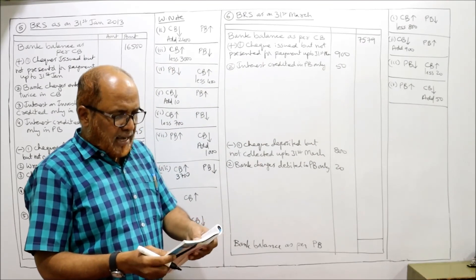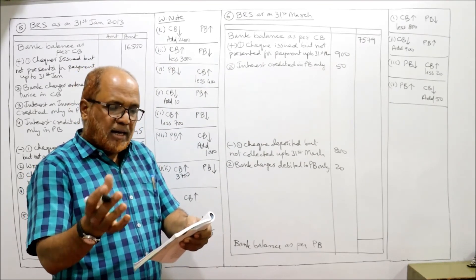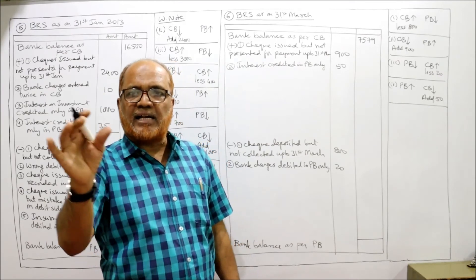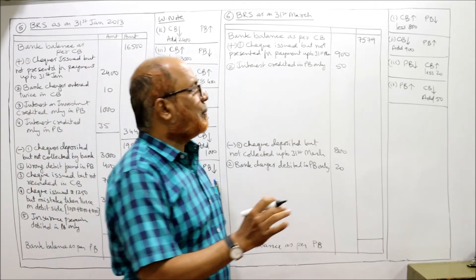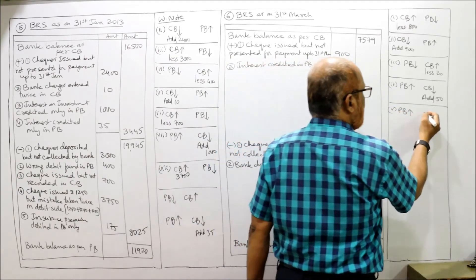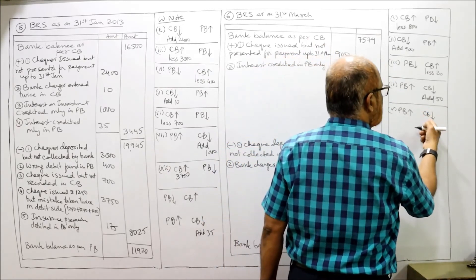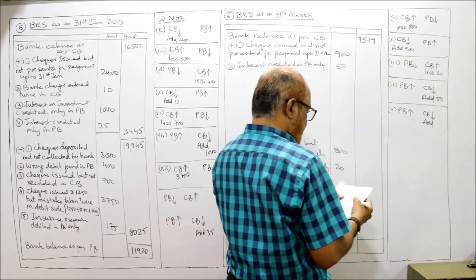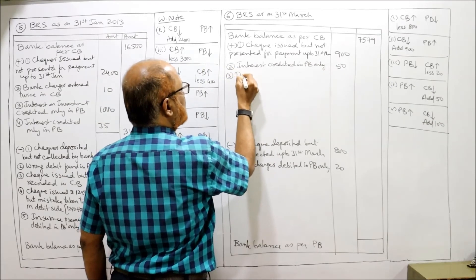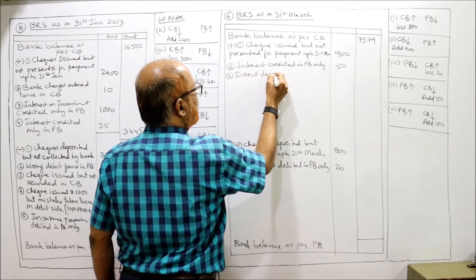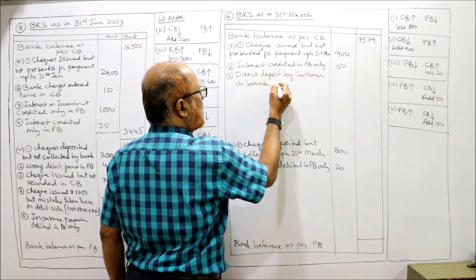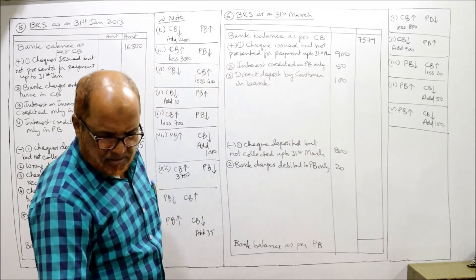Fifth item: an entry of rupees 100 for a payment made directly by a customer into the bank appears in the pass book. Pass book shows more balance due to this direct deposit. Cash book shows less. Our starting point, the cash book, shows less balance, so we add 100 rupees. Add: direct deposit by customer in bank — rupees 100.